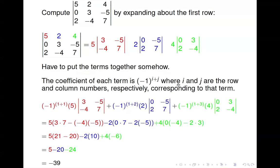For the 4 in row 1, column 3, the coefficient is negative 1 to the 1 plus 3. So combining: negative 1 squared is plus 1, giving us plus 5 times the determinant, which is 3 times 7 minus negative 4 times negative 5. Then negative 1 cubed is negative 1, giving minus 2 times the determinant 0 times 7 minus 2 times negative 5.